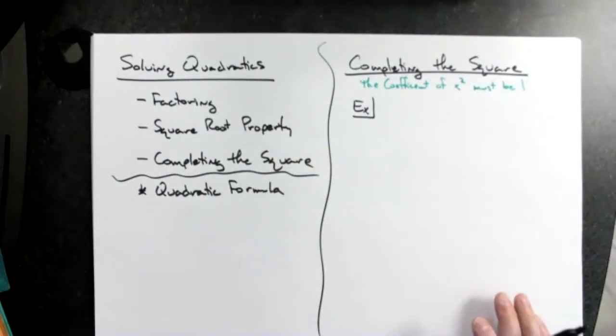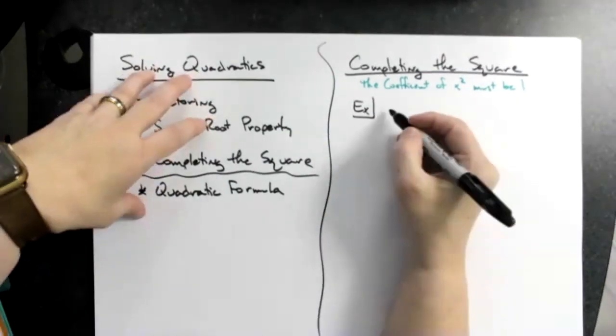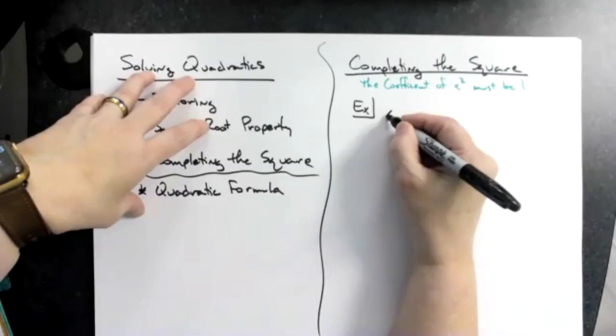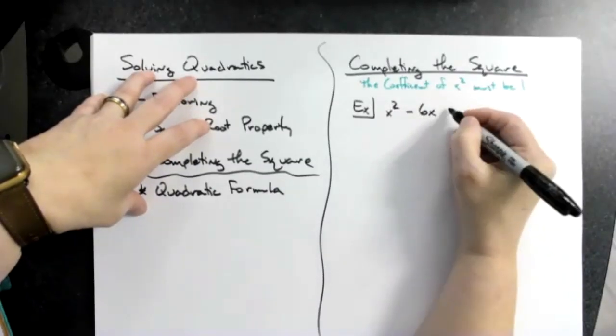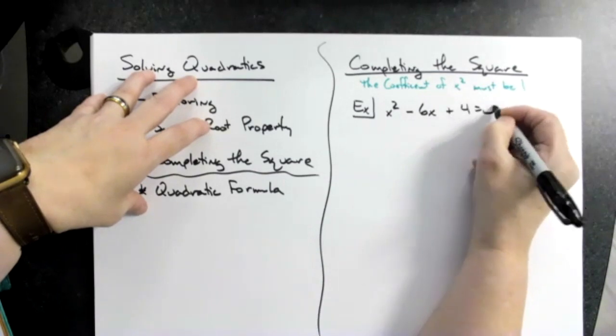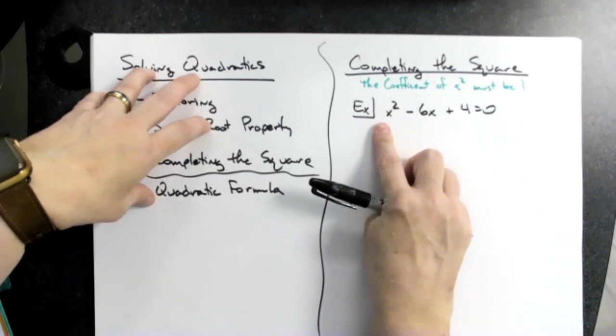So that's the kind we're going to start out with, so that the coefficient is already a one so we don't have to mess with it. Okay, so for an easy one: x squared minus 6x plus 4 equals zero. All right, I clearly have a leading coefficient of one.